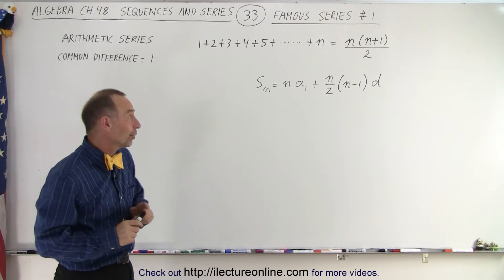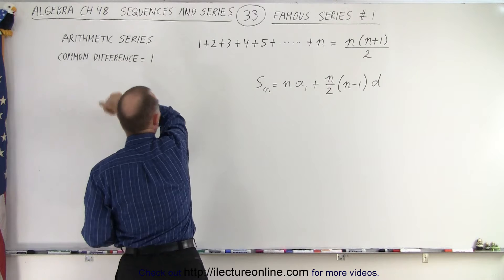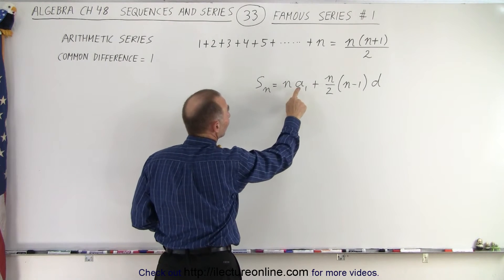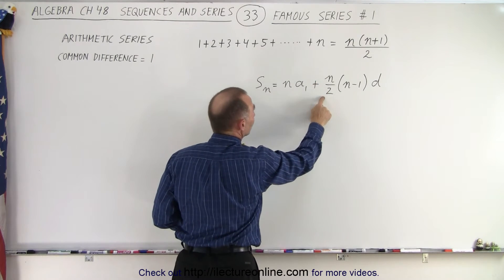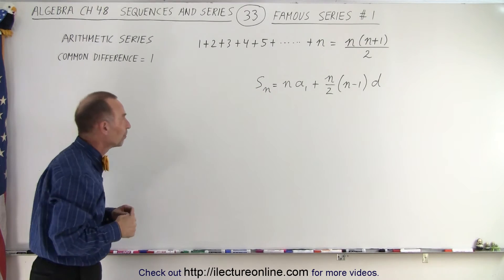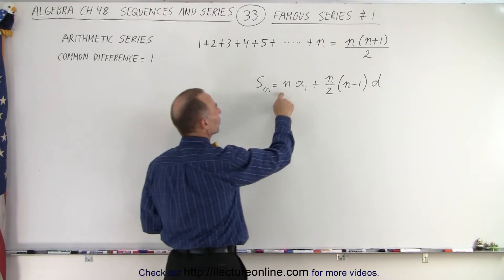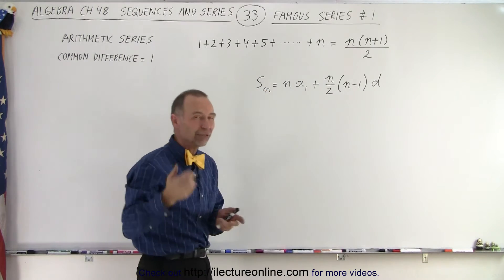Now we also learned in this series that the partial sum of an arithmetic series is equal to n times the first term plus (n/2)(n-1)d, where d is the common difference. Is there a way to go from here to here? The answer is yes. Let's do that.